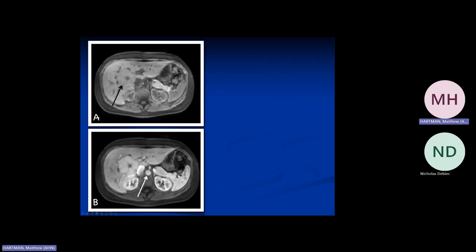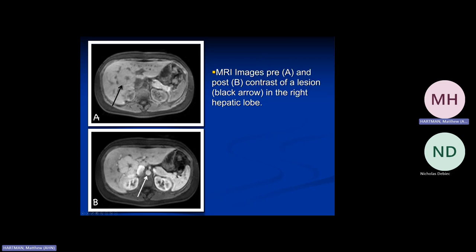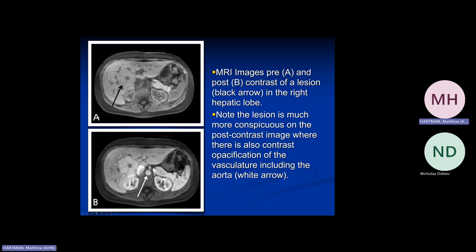Here's an example of a liver lesion: on T1 without contrast it's hard to see, but after giving gadolinium the aorta lights up and the liver lesion lights up as well — with a central scar. From our liver RadPath talk, this was a focal nodular hyperplasia (FNH) — a 'do not touch' lesion. Without contrast it's hard to see; with contrast we can make a confident diagnosis.